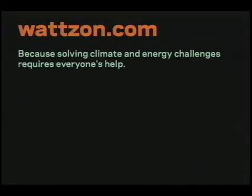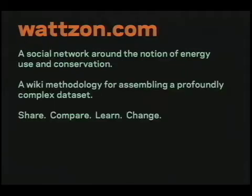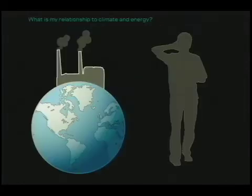What I'm actually going to show today is something called Watson.com, which we've been developing with Rafi Kukorian at Synthesis Studios. It's really a tool — internet tools for solving climate energy changes using everyone. The real underlying goal of it is to measure everything that is measurable and make measurable everything that is not. How do you measure all of the energy use in your life and its impact on the world? We're going to use some social network tools and a wiki methodology to get all of that complex data.